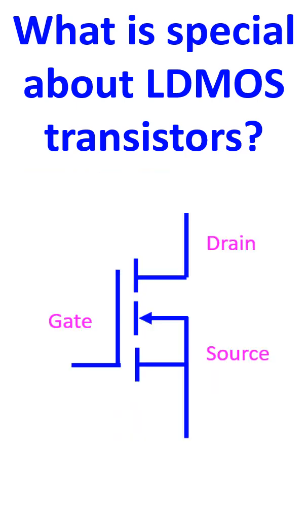As already mentioned, LDMOS transistors are useful in the construction of amateur radio linear amplifiers. Commercial uses include radars and cellular network base stations.